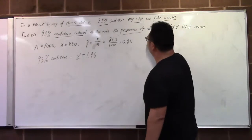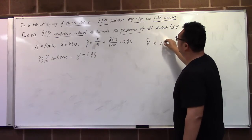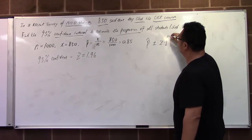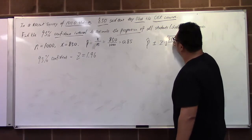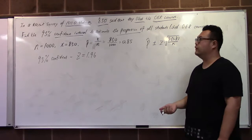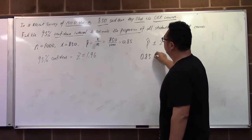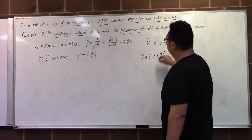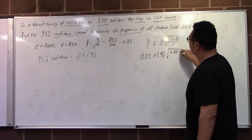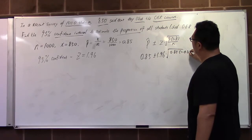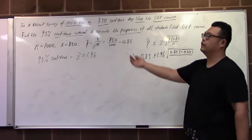The formula is: sample proportion plus or minus the margin of error, which is z times the square root of p-hat times (1 minus p-hat) divided by n. The sample proportion is 0.85, the z-score is 1.96, and the sample size is 1,000.